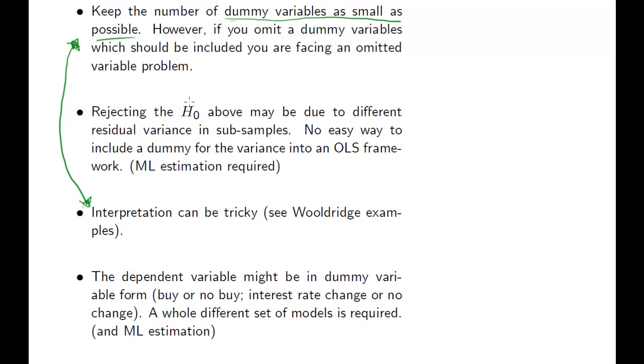If you were to reject a null hypothesis here, remember in the Chow test we assumed constant residual variance or homoscedasticity. If you have change in residual variance, you could think about including a dummy variable for that. But it's not as straightforward because including dummy variables for different changes in variance cannot be done in an OLS framework unless you use GLS. What we usually need is a maximum likelihood framework, and ML stands for maximum likelihood. You'll get a very short introduction of that at the end of this course.